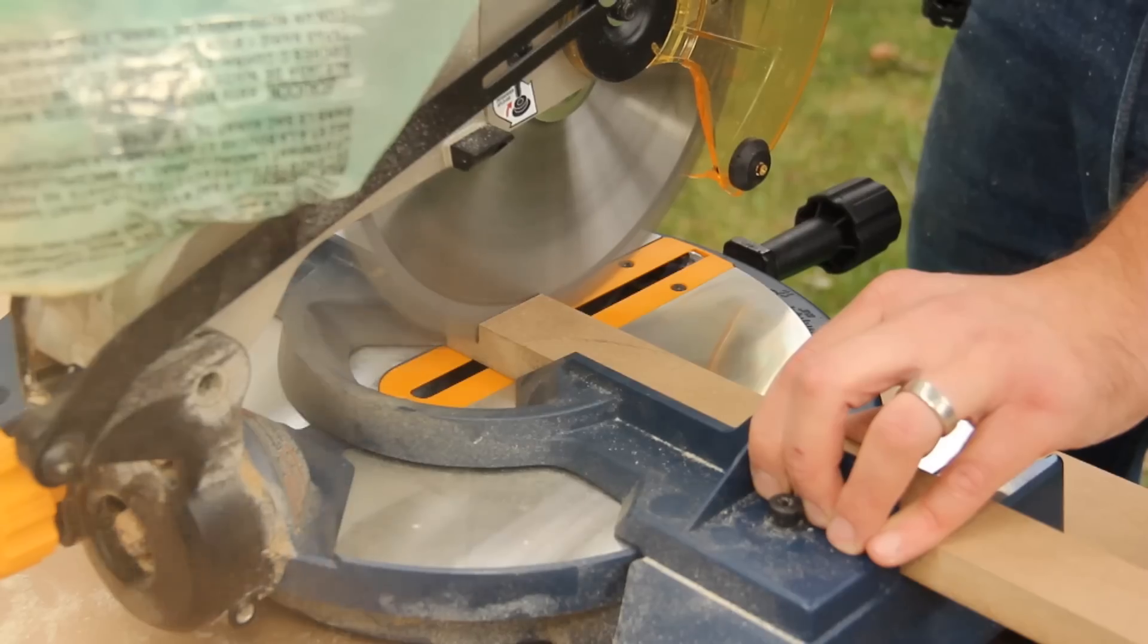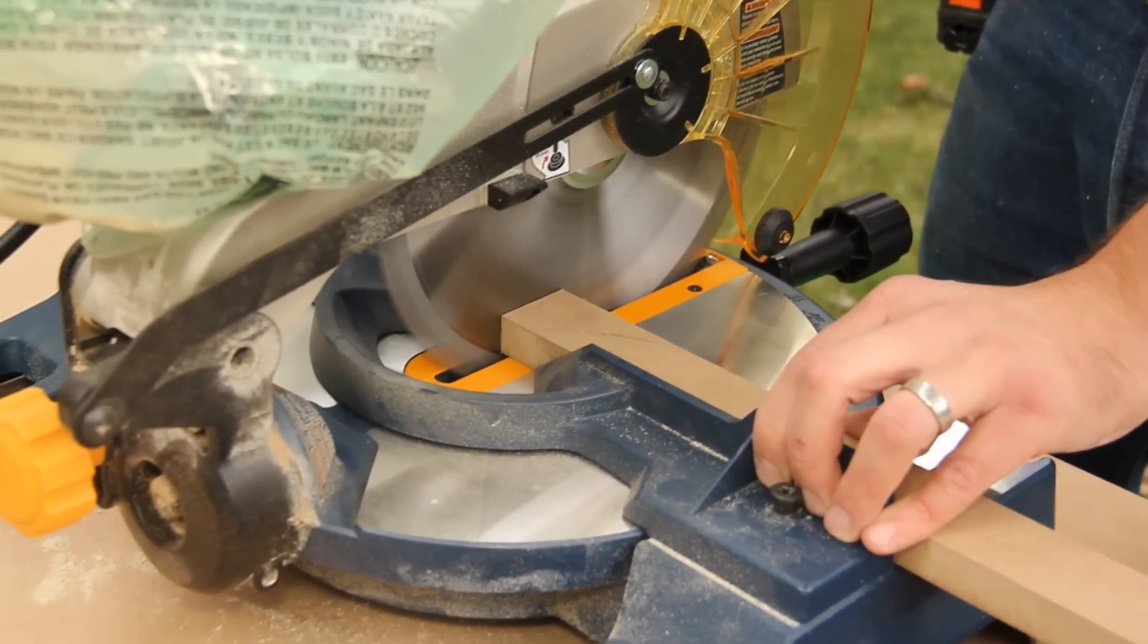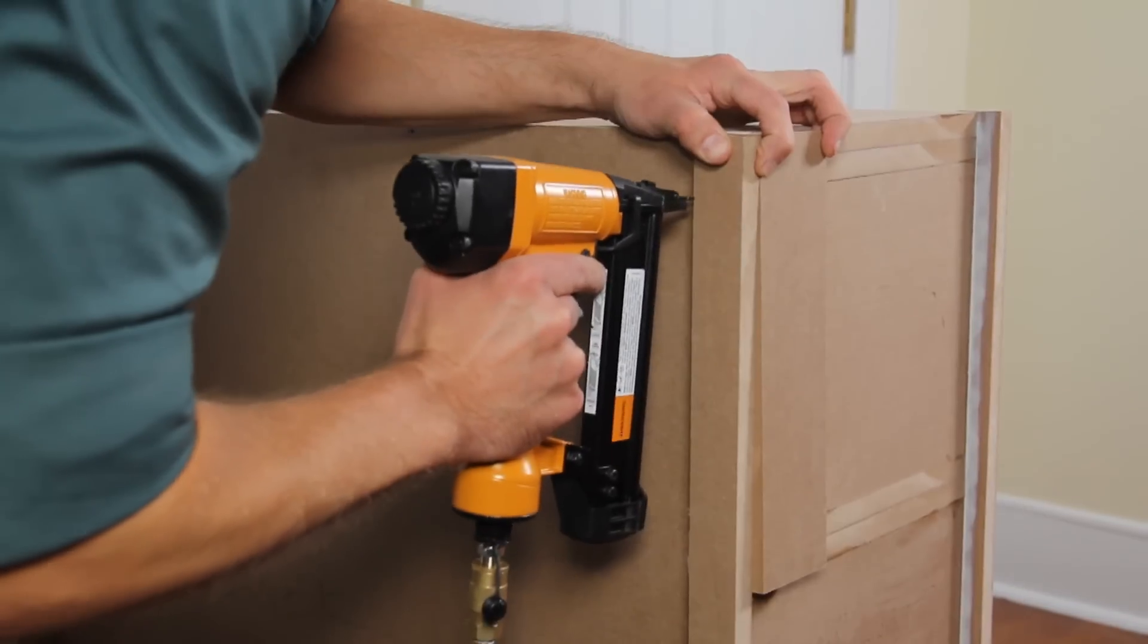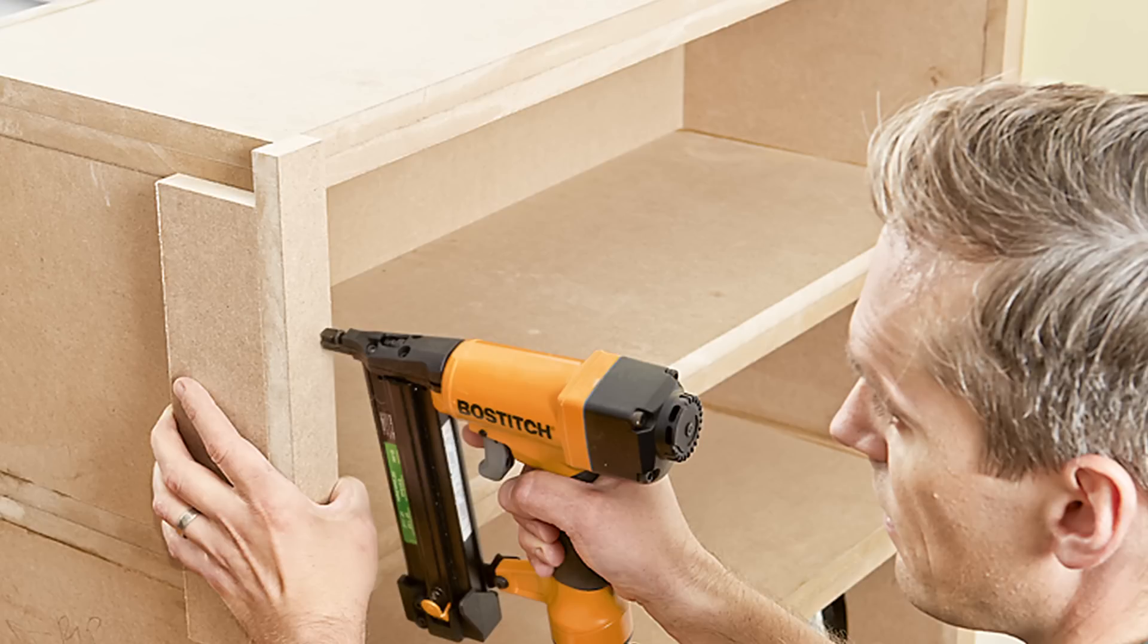To create the face frame, first measure and cut the front and back styles. Glue and tack them in place against the wall on one side and overhanging by three quarters of an inch on the other end, the one that's open to the room.